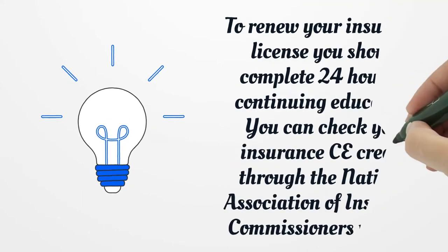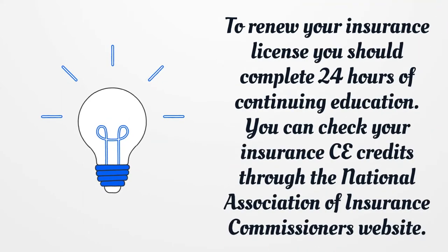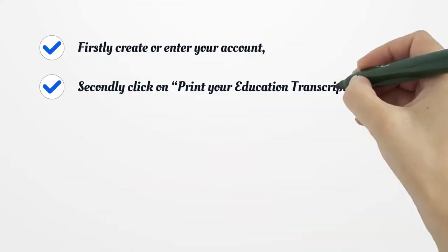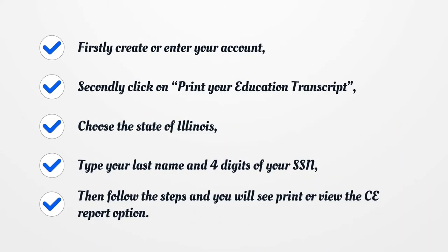To renew your insurance license, you should complete 24 hours of continuing education. You can check your insurance CE credits through the National Association of Insurance Commissioners website. Firstly, create or enter your account. Secondly, click on 'Print Your Education Transcript.' Choose the state of Illinois, type your last name and four digits of your SSN, then follow the steps and you will see the 'Print or View CE Report' option.